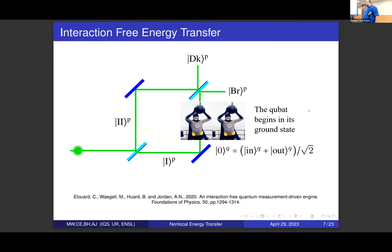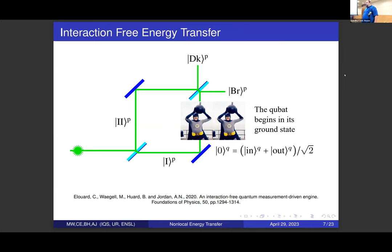Now we're going to modify it a little bit. Instead of having just a bomb that blows up, we're going to have a quantum system. Part of that quantum system is in the path where it would fully block the photon, and part of it is outside the path where it wouldn't. This system is in its energetic ground state when it's spread out like this. We often talk about this system with two states as a qubit, but this is Batman, so I'm going to call it a QBAT — our quantum bat.